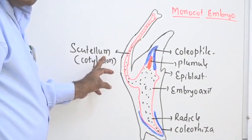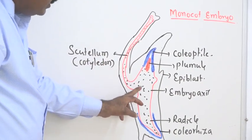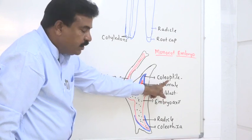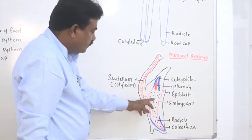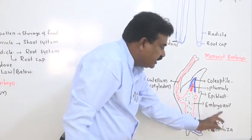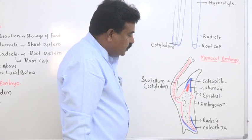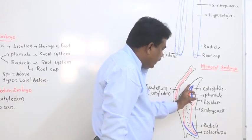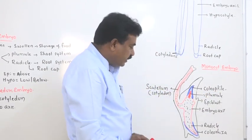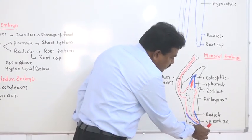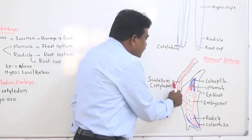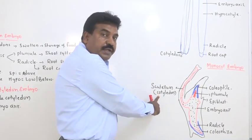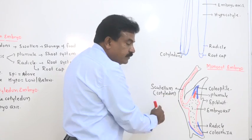The single cotyledon of monocot embryo is called the scutellum. The embryo axis has an ascending axis as the plumule, which develops into the shoot system, and a descending axis as the radicle, which develops into the root system. One special character is that the plumule is protected by a cap-like structure called the coleoptile, and the radicle is protected by a cap-like structure called the coleorhiza. The scutellum is the single cotyledon of the monocot embryo.